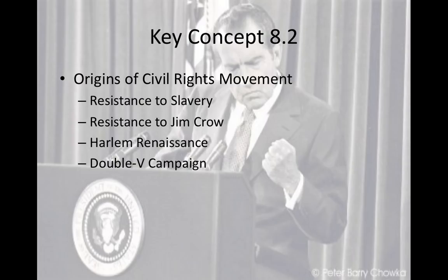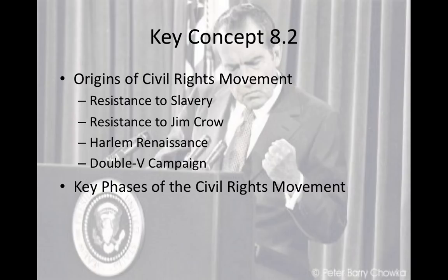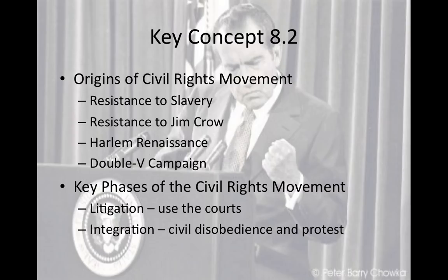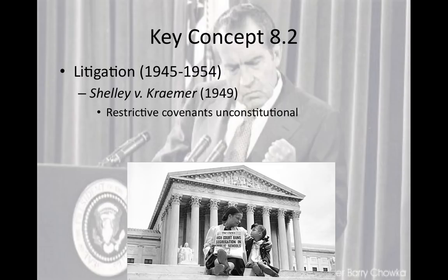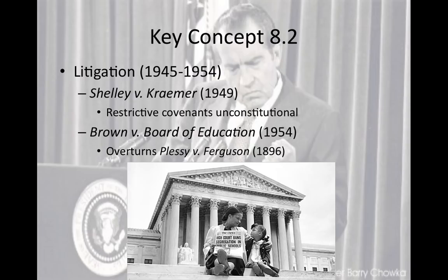Key phases of the civil rights movement: first, they tried to use the courts through litigation; then civil disobedience and protest to integrate public places; and finally, separation — where frustration with the first two led to self-defense, militant advocacy, and autonomy. The litigation phase is embodied by Shelley v. Kramer, which called restrictive covenants unconstitutional, and Brown v. Board of Education in 1954, which overturned Plessy v. Ferguson's separate but equal clause, declaring separate accommodations inherently unequal. However, Southern states resisted Brown's ruling in what was called massive resistance.